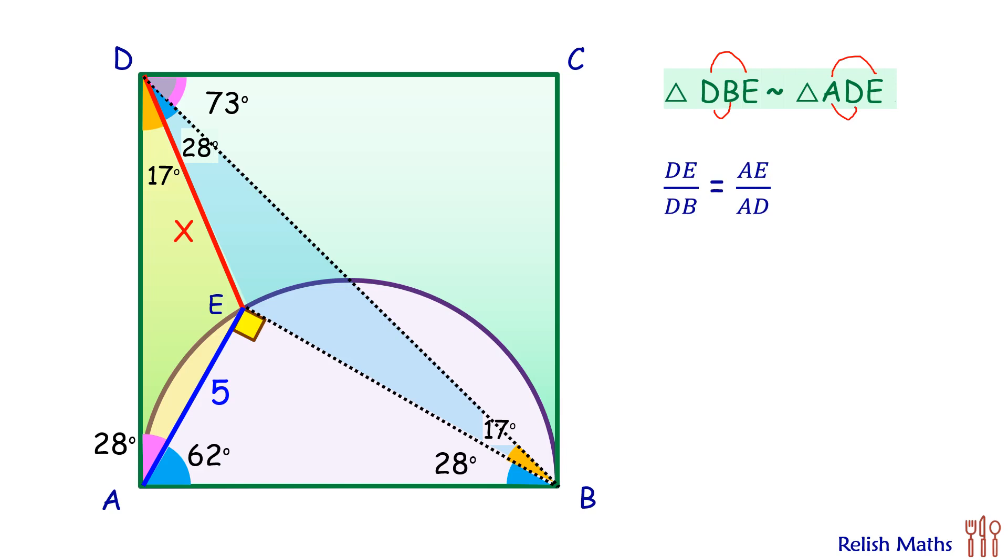How about DE? DE is nothing but x, which we have to find. And DB is the diagonal length. So let's say the side length of the square is a units, and thus the diagonal will be √2a centimeters.